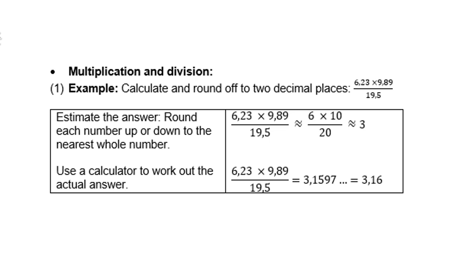Multiplication and division. Example, calculate and round off to 2 decimal places. 6,23 times 9,89 divided by 19,5. So let's first estimate. 6,23 is rounded down to 6. 9,89 is rounded up to 10. And 19,5 is rounded up to 20. So 6 times 10 is 60 divided by 20 is 3.